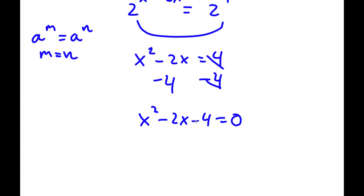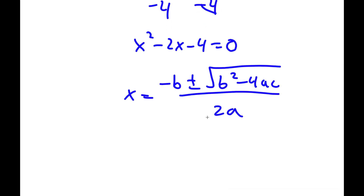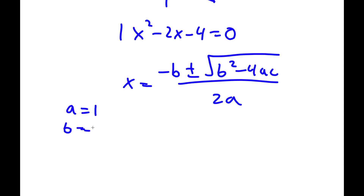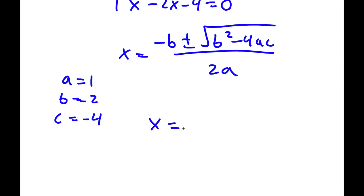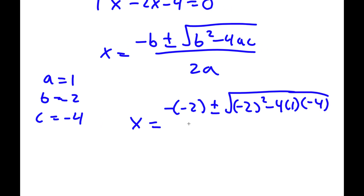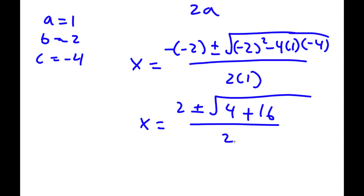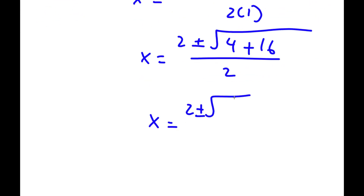To solve this I'm going to use the quadratic formula: x equals negative b plus or minus the square root of b squared minus 4ac, all over 2a. In this case, a equals 1, b equals negative 2, and c equals negative 4. So x equals negative negative 2, which is positive 2, plus or minus the square root of negative 2 squared minus 4 times 1 times negative 4, all over 2 times 1. That gives 2 plus or minus the square root of 4 minus negative 16, which is 4 plus 16, all over 2.